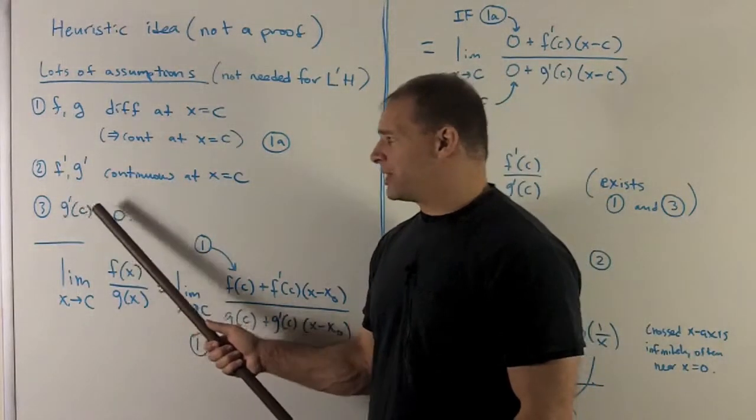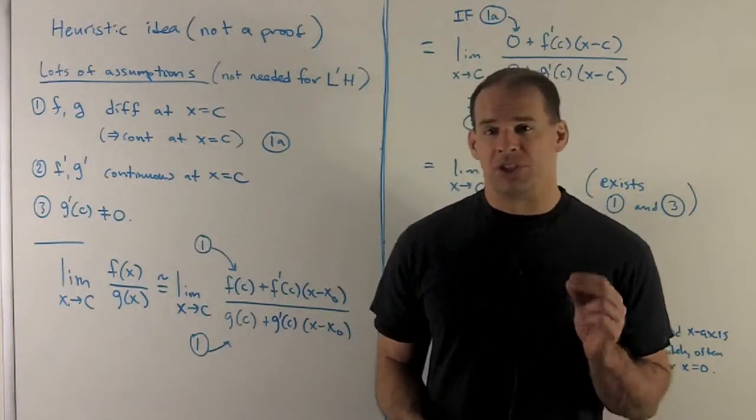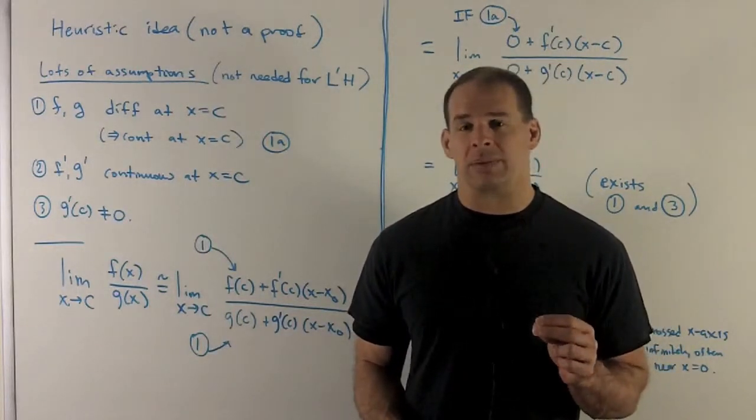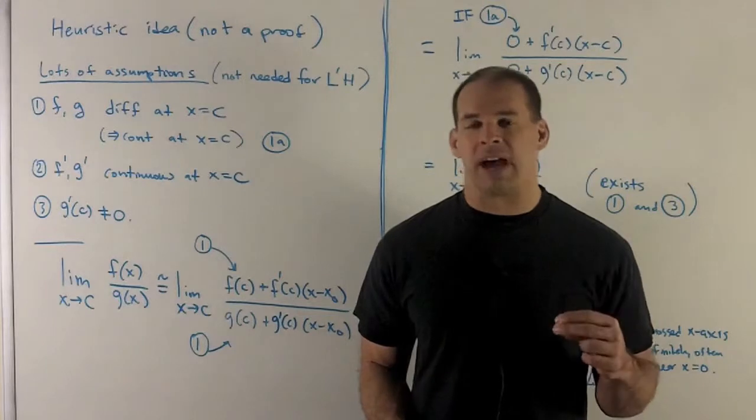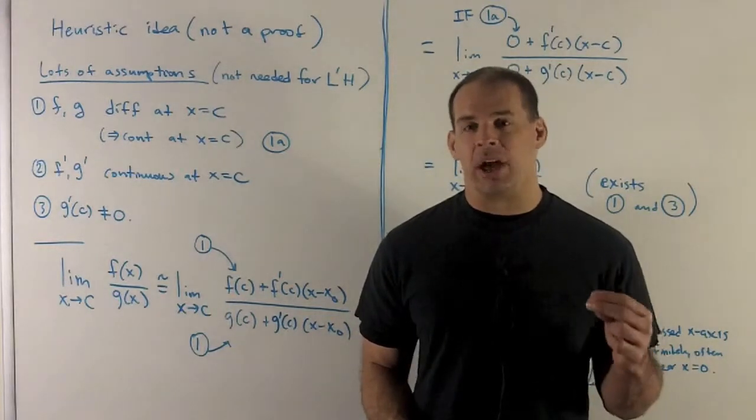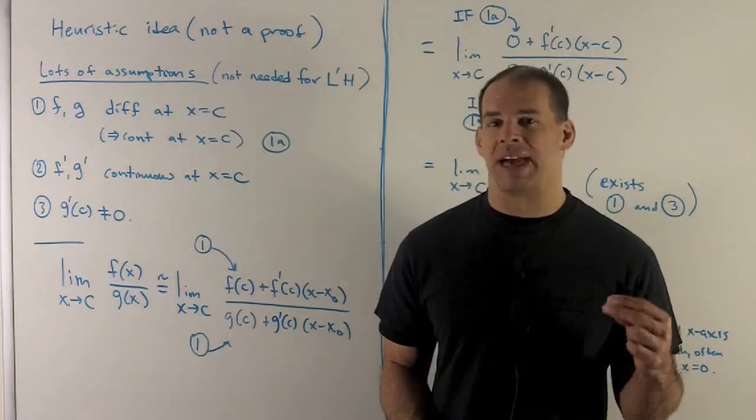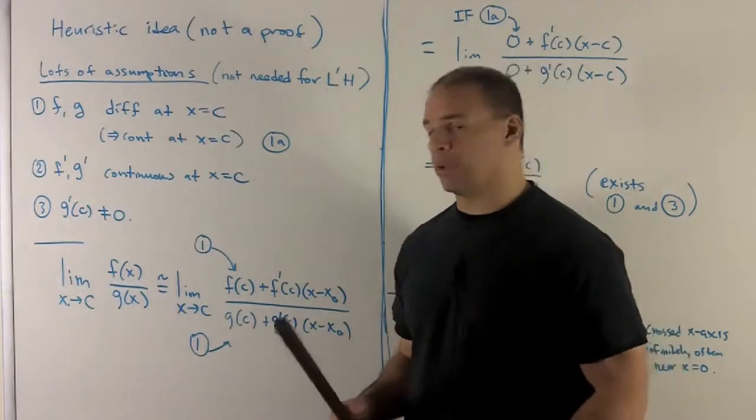Third assumption, g prime of c is non-zero. This is just so that at the end of the day, when I look at the f prime over g prime, my answer is not dividing by zero, and I actually get a number to come out, so that means that limit will exist, the quotient limit.